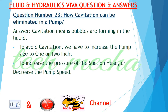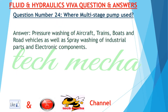Question number 23: How can cavitation be eliminated in a pump? Answer: Cavitation means bubbles are forming in the liquid. To avoid cavitation, we have to increase the pump size by one or two inches, increase the pressure of the suction head, or decrease the pump speed. Question number 24: Where is a multi-stage pump used? Answer: Pressure washing of aircraft, trains, boats, and road vehicles, as well as spray washing of industrial parts and electronic components.